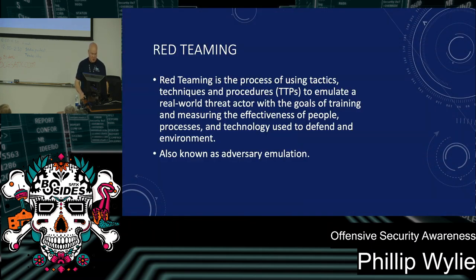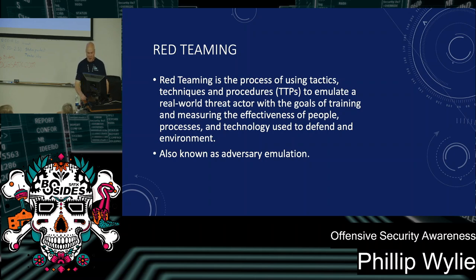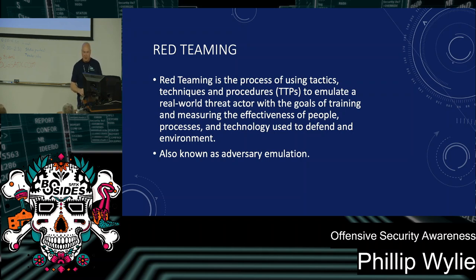Red teaming uses techniques, tactics, and procedures to emulate real-world threat actors — it's adversary emulation. With the red team, you're doing reconnaissance and trying to gain a foothold, but you're trying to be quiet and go undetected. With pen testing, you're limited on time — it's a time-boxed test. With a red team operation, threat actors have months or even years to try to get into environments, and sometimes that's how long it takes. Emulating a threat actor means you need more time, especially because you're trying to be quiet.